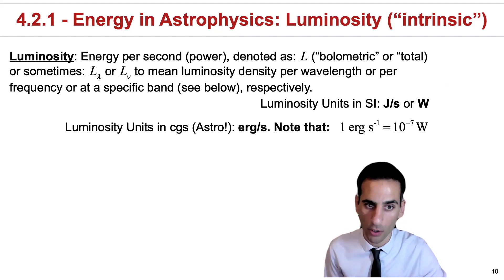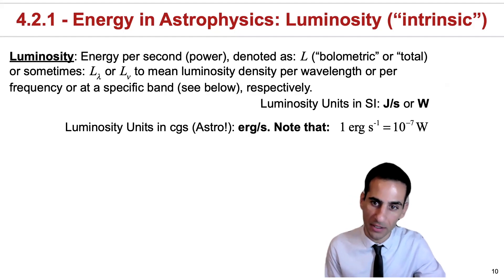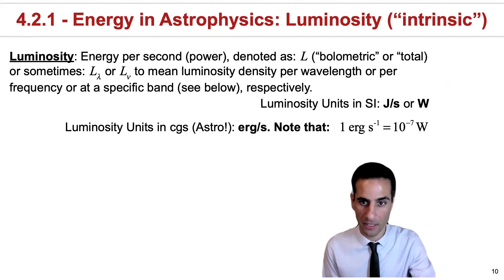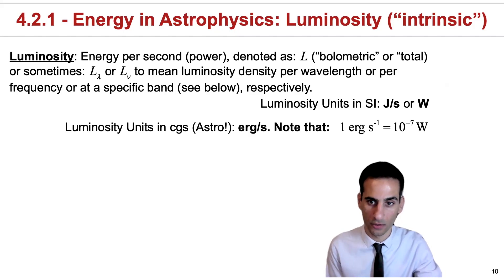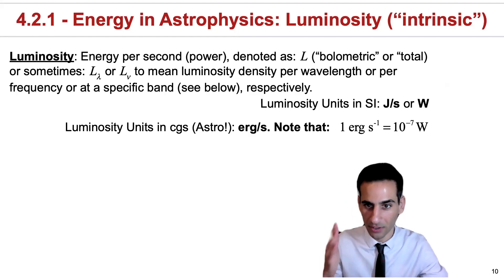In astronomy we do use cgs a lot, and I'll explain why that is the case. In cgs, the units of luminosity are erg per second, where an erg per second is equivalent to 10 to the minus 7 watts.